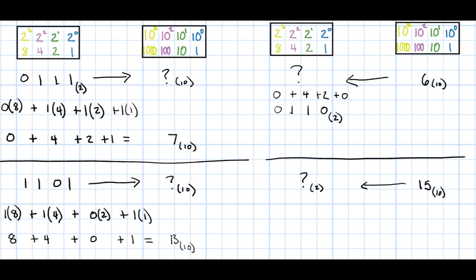How do we know if we need any more digits? Remember that this reference table continues on. The next place would be 2 raised to the power of 4, which is equal to 16. Since our target number 15 is not greater than 16, we won't need that place.